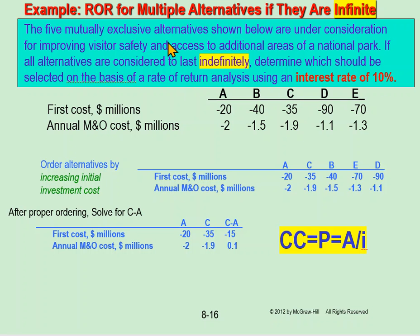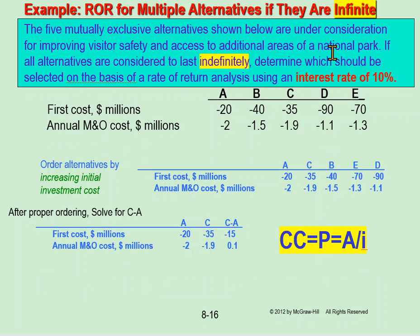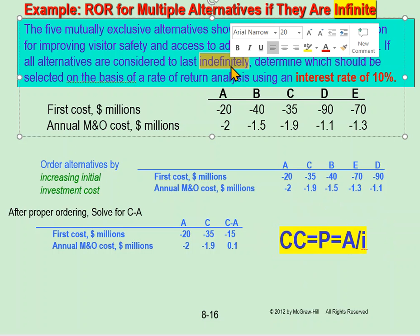This example shows a question about incremental rate of return for multiple alternatives, but we are not using a regular finite number of years. The period is unlimited — it is infinite. In that case, we are talking about CC, which is capital cost. Capital cost means we have something indefinite, meaning the period is infinite.